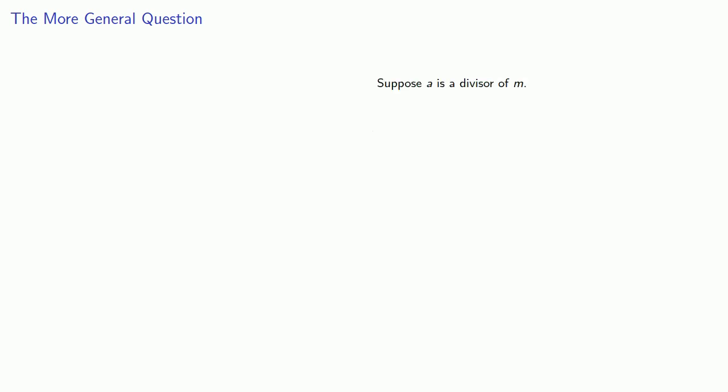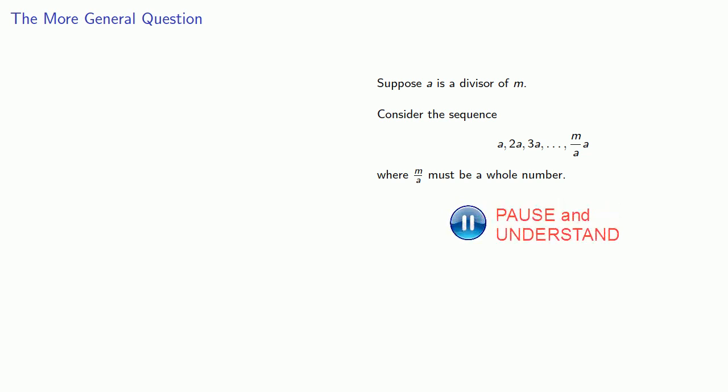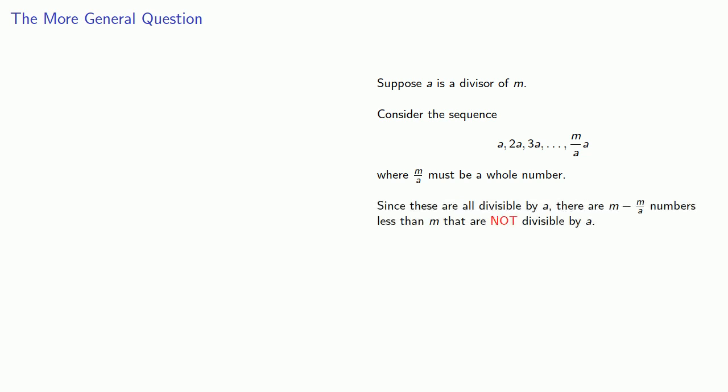Dirichlet approaches the problem as follows. Suppose a is a divisor of m. Consider the sequence a, 2a, 3a, and so on, all the way up to (m divided by a) times a, where m divided by a must be a whole number — remember, we're assuming a is a divisor of m. Now since all of these are clearly divisible by a, that means there must be m minus m/a numbers less than m that are not divisible by a.